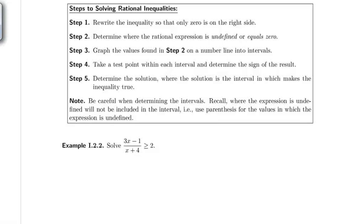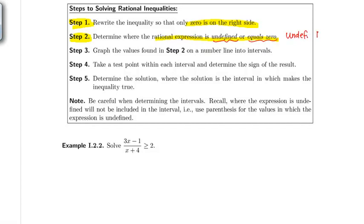In the last example, we saw that solving rational inequalities gives an interval of numbers. The main steps to remember: step one, make sure that zero is on the right side. And in step two, we must find where the rational expression is undefined or equal to zero. Where it is undefined is where the denominator is zero, and where it equals zero is where the numerator is zero.